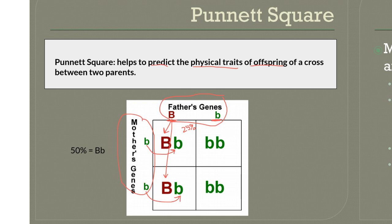If you look on the other side of the Punnett square, the father's small b comes down and the mother's small b comes across, so each of these will have small b, small b. That means the other 50% of the offspring will be small b, small b.